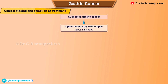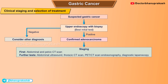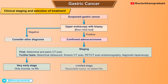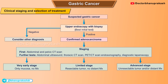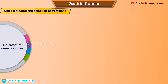For suspected gastric cancer, upper endoscopy with biopsy is the first and best initial test. If negative, consider other diagnoses; if positive and adenocarcinoma confirmed, proceed to staging. Staging begins with abdominal and pelvic CT scan, followed by further tests including abdominal ultrasound, thoracic CT scan, PET scan, endosonography, and diagnostic laparoscopy. Very early stage disease has only mucosal involvement with no metastasis; limited stage has a resectable tumor with no distant metastasis; advanced stage has an unresectable tumor and/or distant metastasis.